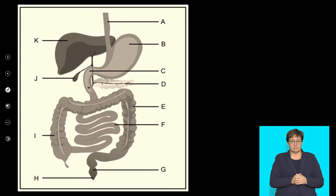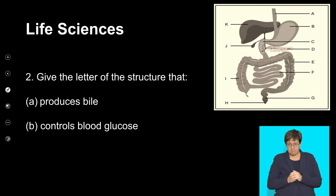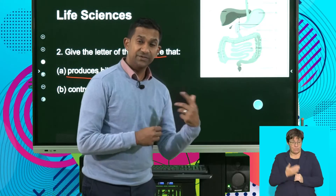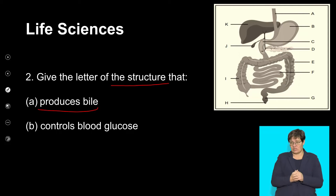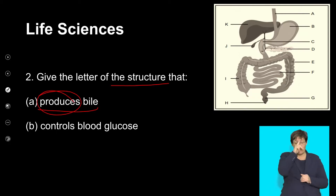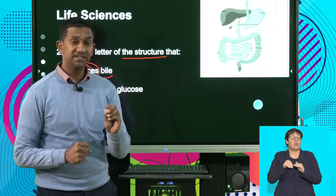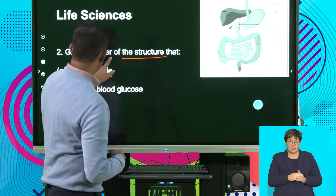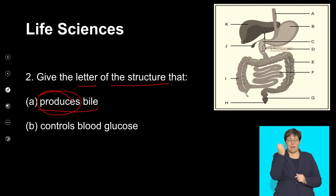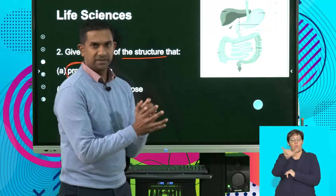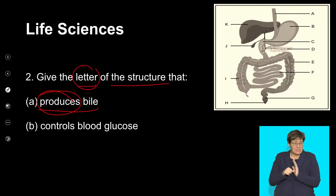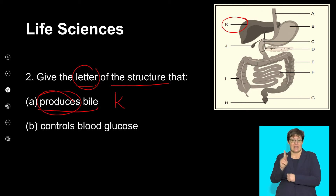Let's move on to more questions based on this diagram. Give the letter of the structure that produces bile. As noted when labeling the parts, the liver produces bile; however, it is stored and released temporarily from the gallbladder. The question asks for the letter of the structure that produces bile — it's the liver, so the answer is K. Remember not to give the name because the examiner is testing whether you can identify the part from the diagram.